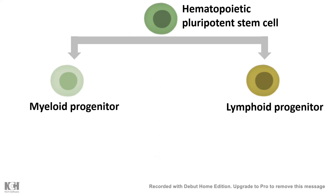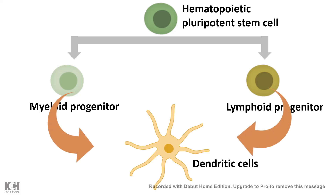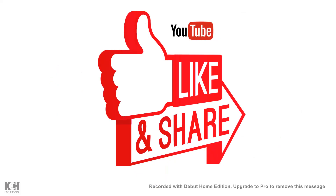Hematopoietic pluripotent stem cells give rise to two branches: myeloid progenitor and lymphoid progenitor. One important immune component is the dendritic cell — it's still not entirely clear which progenitor gives rise to it, as both lymphoid and myeloid progenitors can generate dendritic cells. Dendritic cells and macrophages are key components of the innate immune system, and dendritic cells work as a bridge between the innate and adaptive immune systems. This concludes the overview of immune system development.